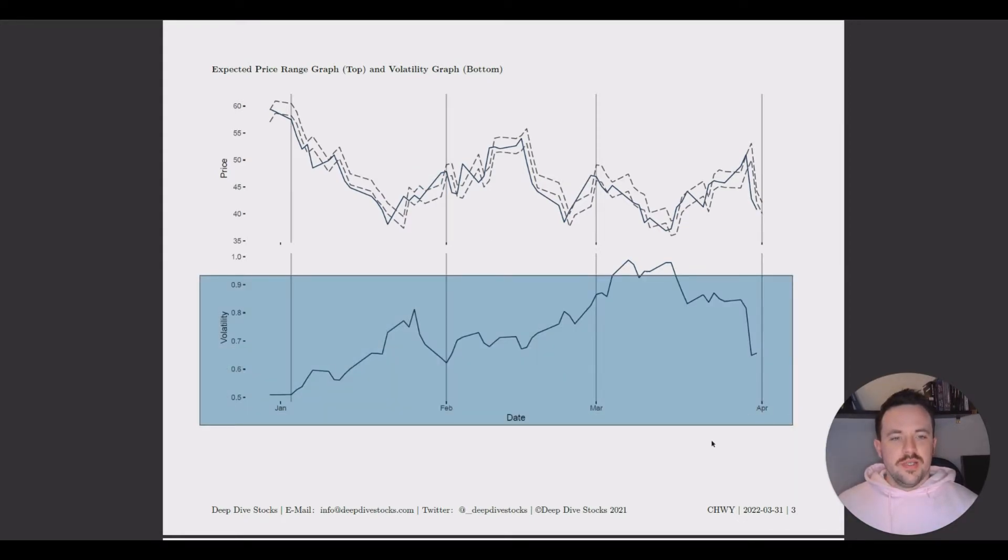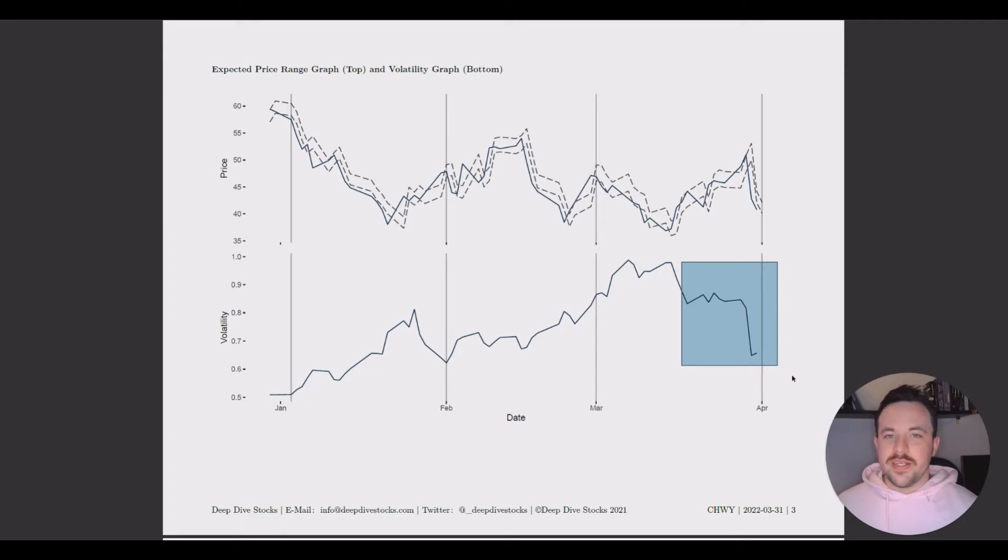The volatility here, we see that it's just kind of been going up for the past three months at least. Recently, in the middle of March, it seems like liquidity has kind of returned back to the stock. Volatility dropped a little bit, but overall though, the behavior of volatility is relatively steady on Chewy, so we don't see volatility spiking up and down and going all over the place. It's just kind of slowly been rising.